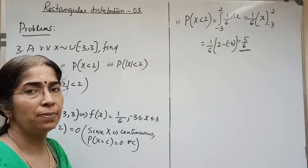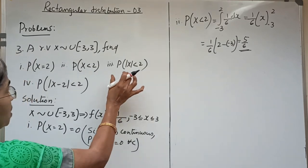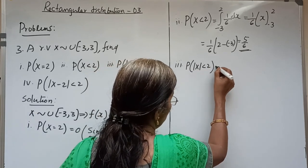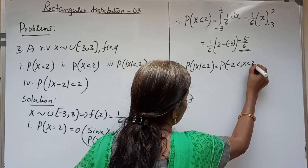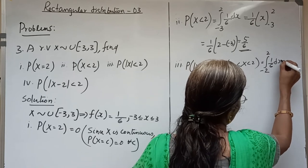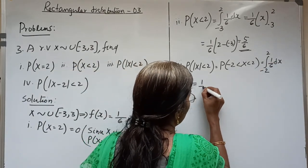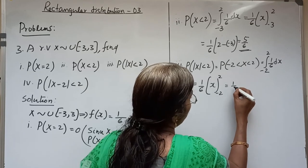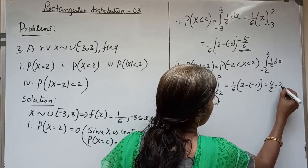In order to obtain probability in an interval (a, b), we integrate f(x) over the given interval. Now for P(|X| < 2): |X| < 2 means -2 < X < 2. So P(|X| < 2) = integral from -2 to 2 of (1/6) dx = (1/6)[x] from -2 to 2 = (1/6)(2-(-2)) = 4/6 = 2/3.